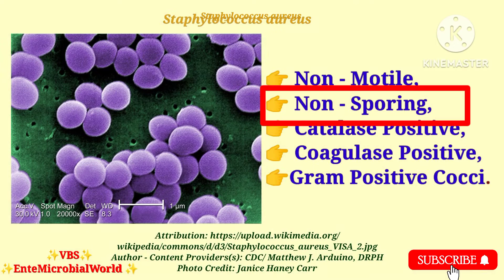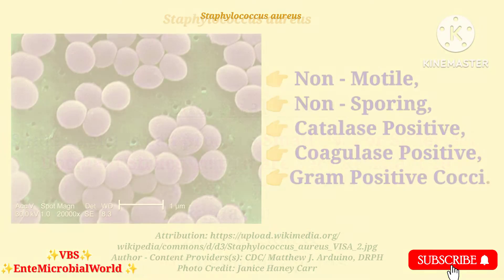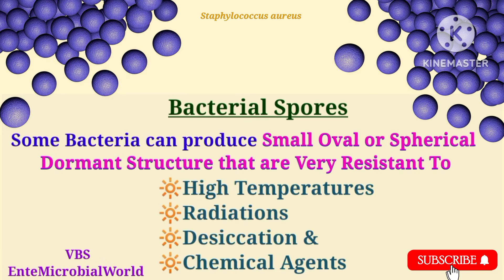Why we are calling it a non-spore forming bacteria: Staphylococcus aureus does not produce endospores. Some bacteria can produce small oval or spherical dormant structures called spores that are very resistant to high temperatures, radiations, desiccation and chemical agents.